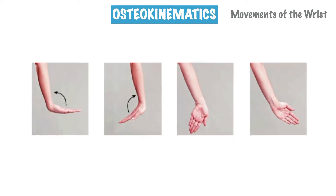Let's now look at the osteokinematic movements of the wrist. In our first picture to the left we have wrist flexion. To try this movement, place your hand directly in front of you with your palm facing upwards, then bend at the wrist so that your fingers are pointing back towards you. This is wrist flexion. Keep in mind that flexion involves a bending movement and it decreases the angle of a joint.